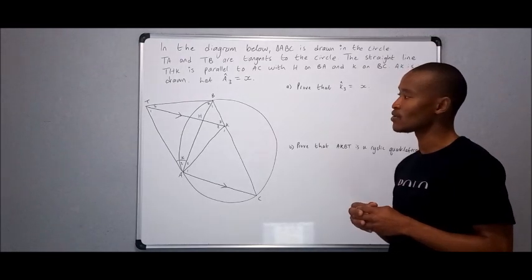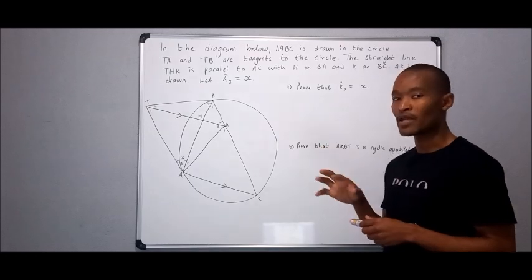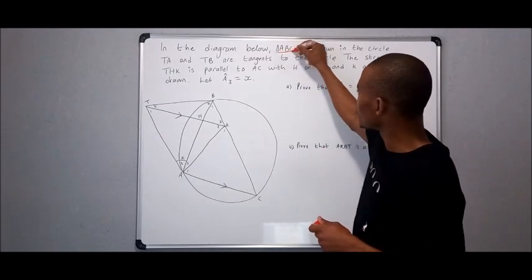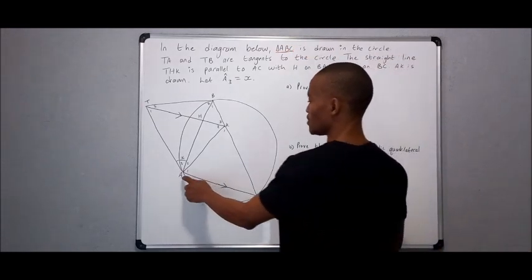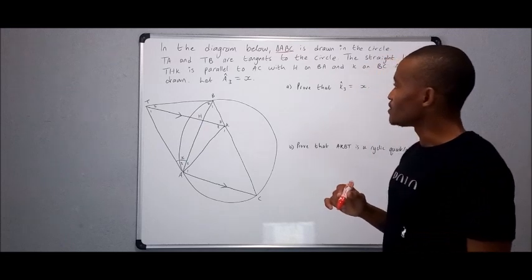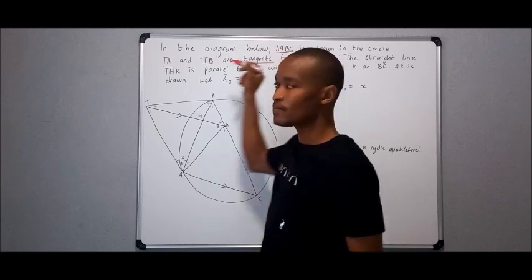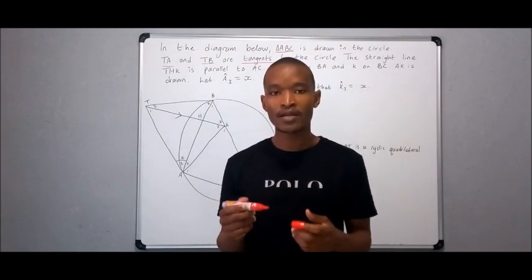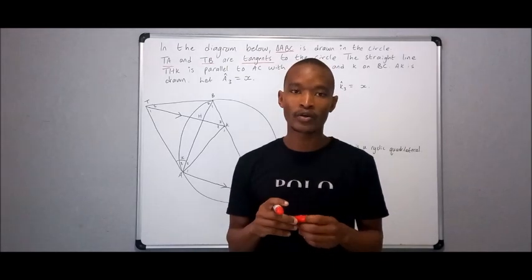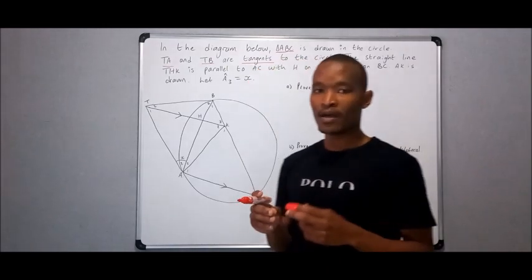AK is drawn. Let angle A3 equal to x. We look for keywords; we now want to create connections. So there's a triangle ABC, there we see it. And then TA and TB are tangents. That helps us to recall the tangents from the same point theorem or the ten-chord theorem.